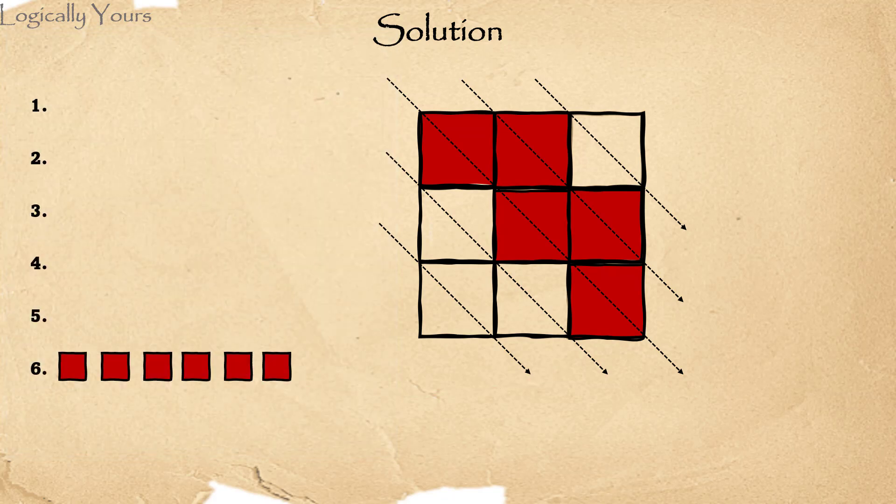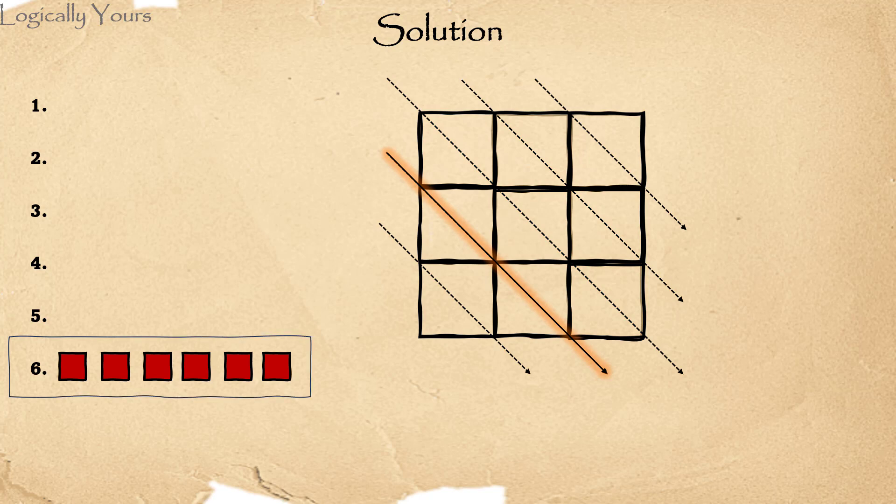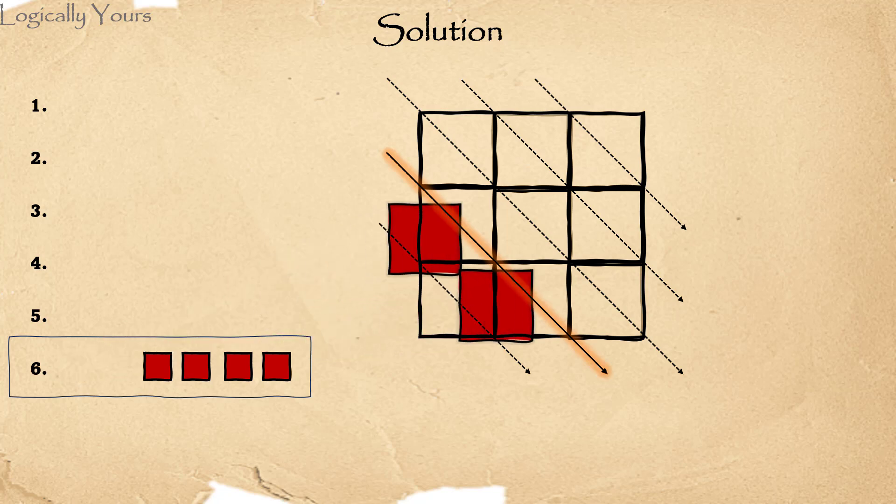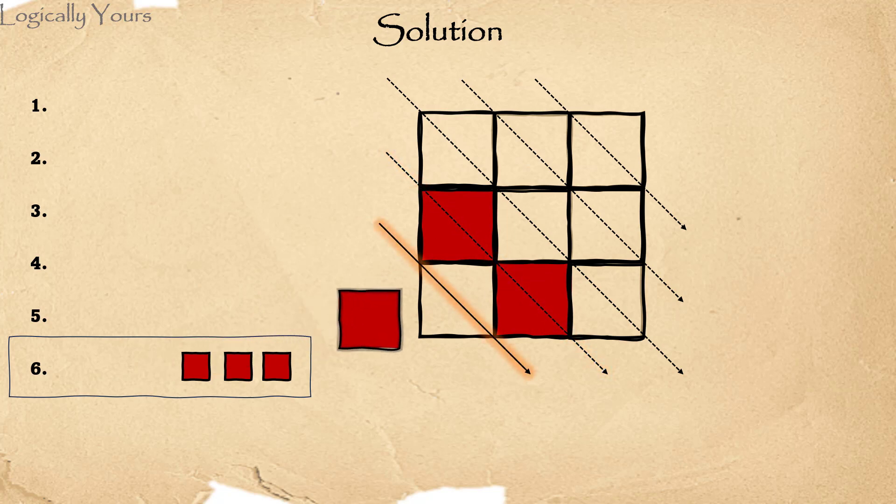Let's move on to the next diagonal. Now finally, we need to fit these six red squares for the next picture that is picture number six. This diagonal can have only two squares. So we would move to the next diagonal, which can have one red square.